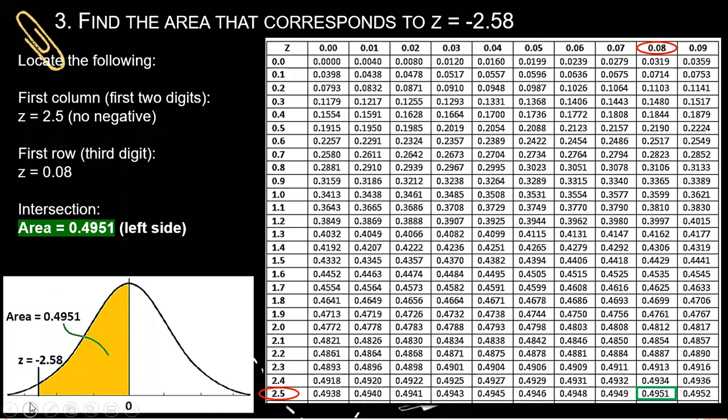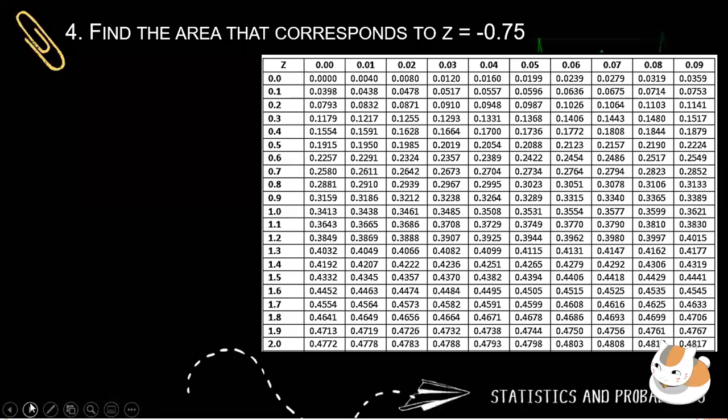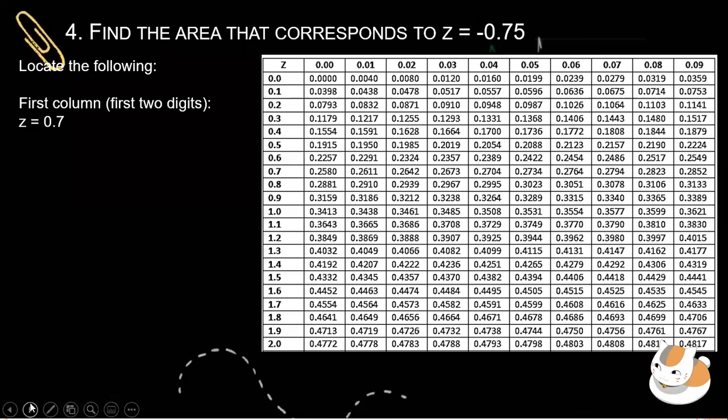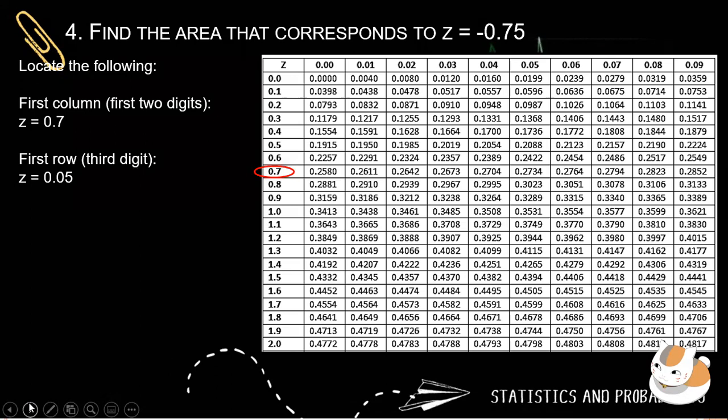Let's have the last one. Find the area that corresponds to negative 0.75. First, we locate the first two digits in the first column. So we have 0.7. So we disregard the negative sign. So that's one. Next, we locate the first row using the third digit. So that is 0.05. And then we get the intersection. So that is 0.2734.